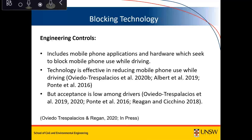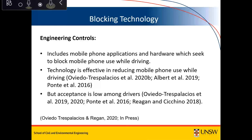Blocking technology is another category found to be effective. It includes mobile phone applications and hardware aimed at blocking mobile phone use while driving. The technology has been effective in reducing mobile phone use while driving. However, research by my colleague Dr. Oscar Oviedo and others has found that even though these technologies are effective, acceptance among drivers — particularly younger drivers — is low. There's always this human factor we have to contend with when developing these technologies.